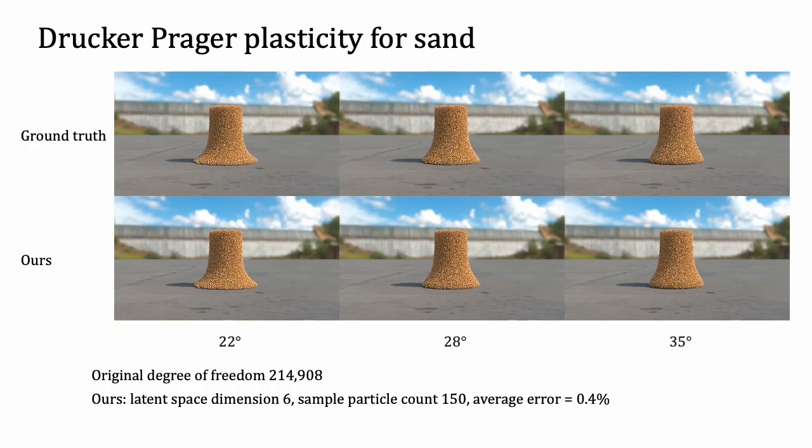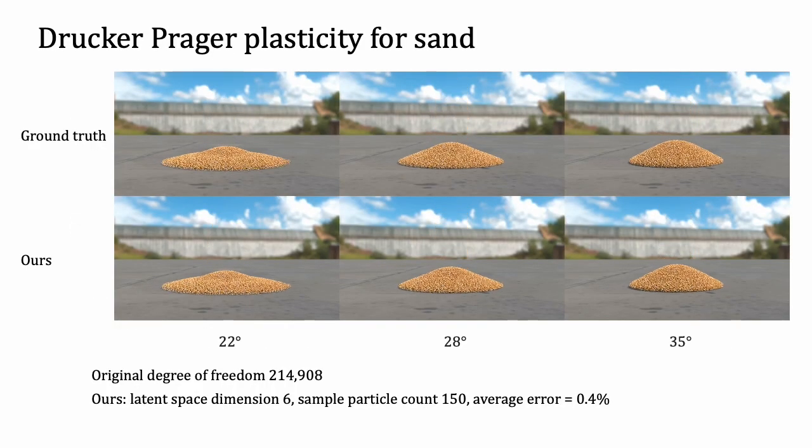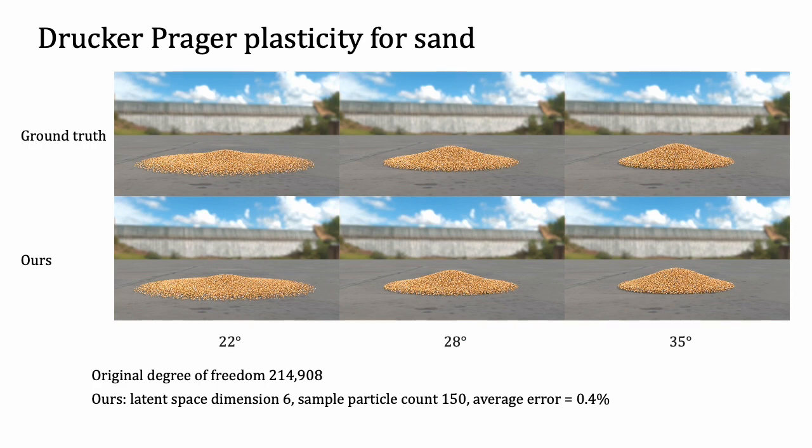Our approach can also handle a variety of different plastic scenarios. We simulate the falling of a column of sand under different friction angles ranging from 20 to 40 degrees. With just 150 sample particles, we can predict the geometry of unseen friction angles with an average error of 0.4%.